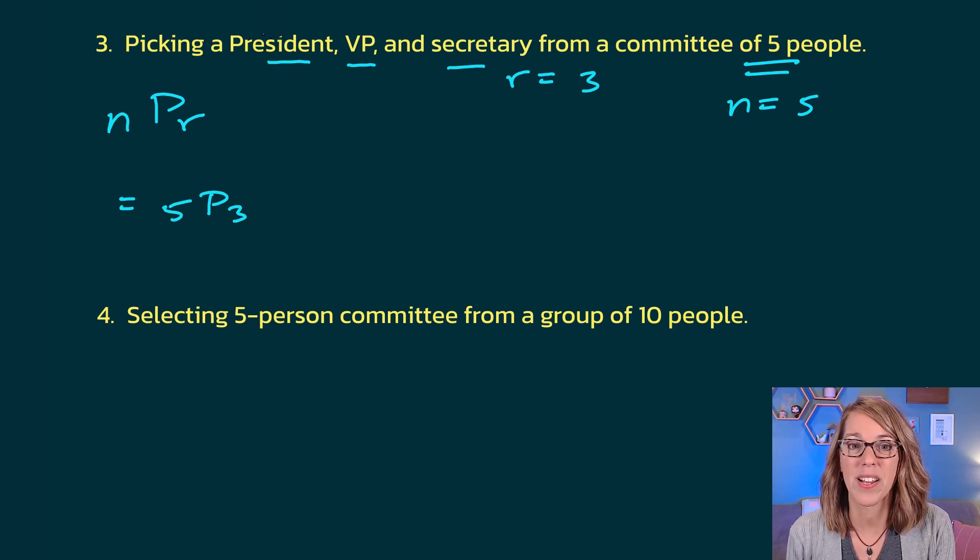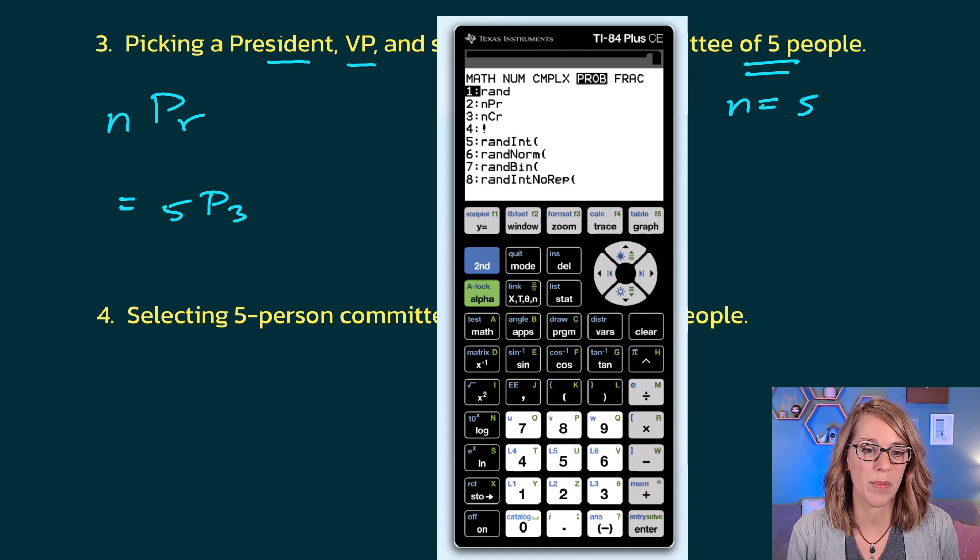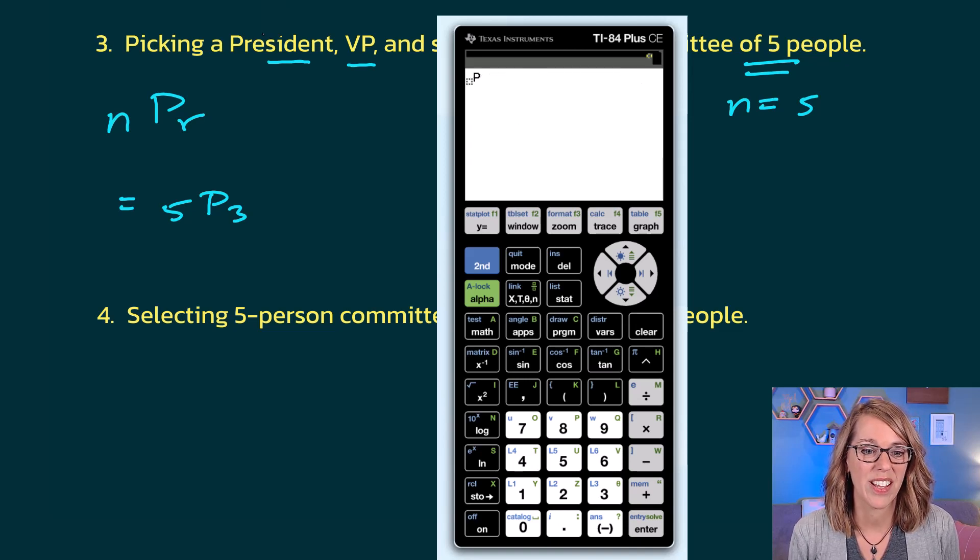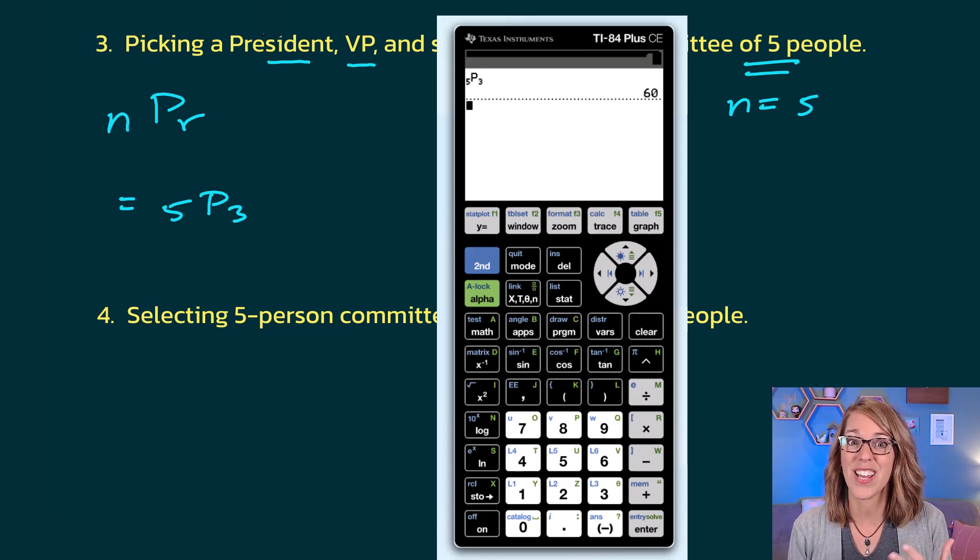I'm not going to bother with the formula. Let's just put this right into the calculator. Math, and then probability. Choose that permutation, and then enter. I've got 5 on my committee. I'm going to choose 3 to be one of my officers. I hit enter, and I've got 60 different ways to make that happen.